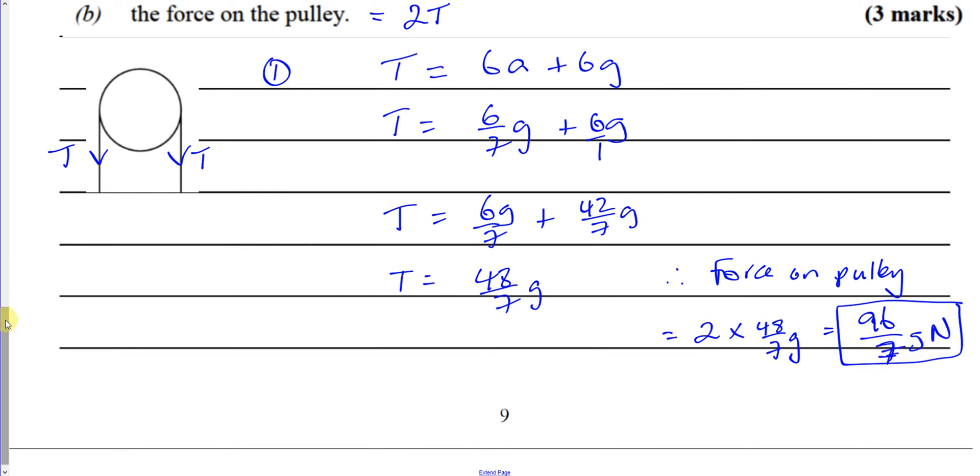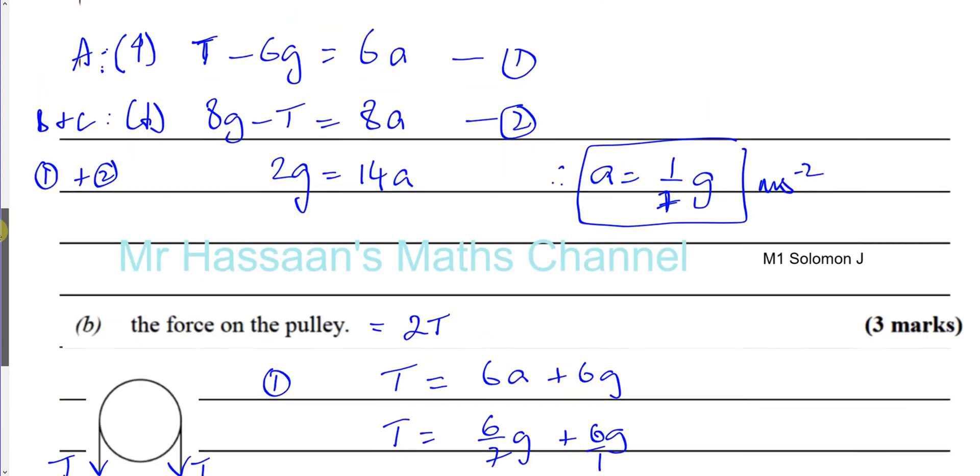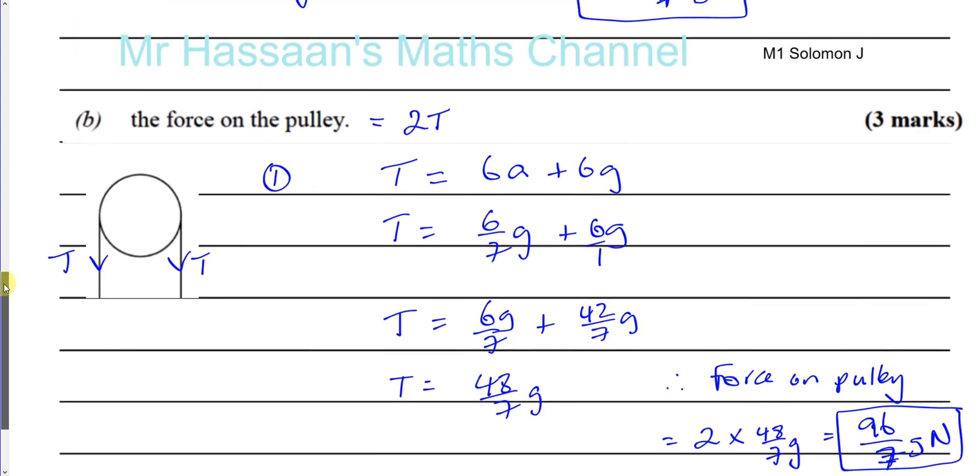So I've got now the force acting on the pulley. 96 over 7G Newtons. And there, the acceleration, 1 over 7G meters per second squared. So that's part A and B done.